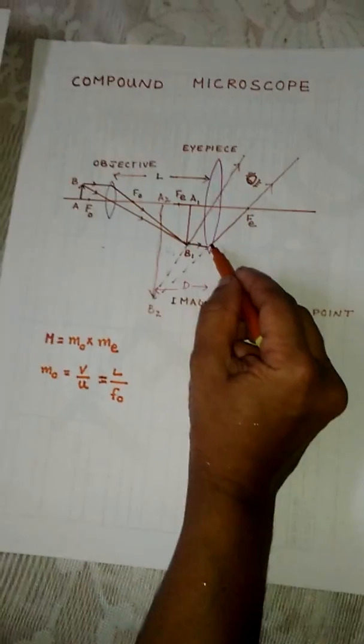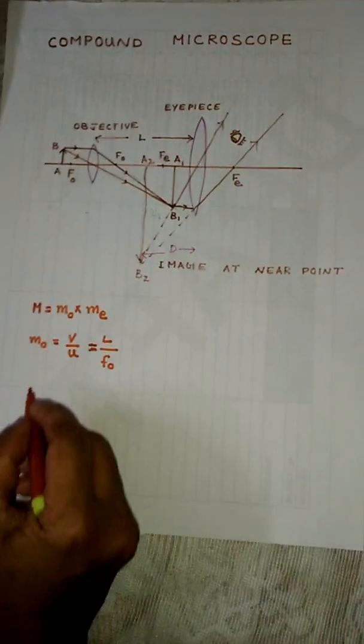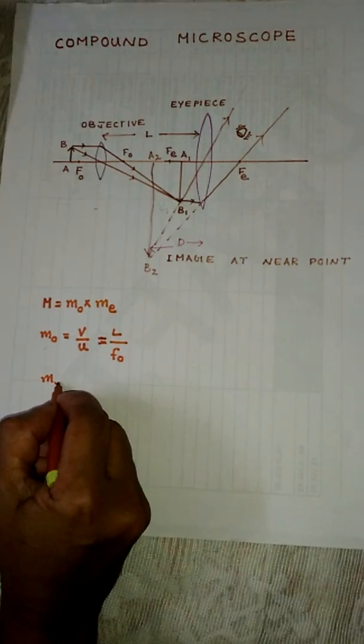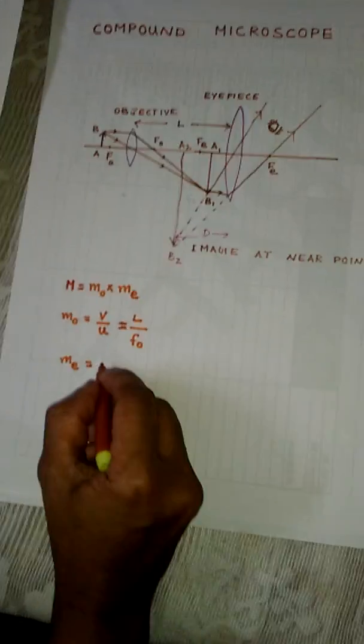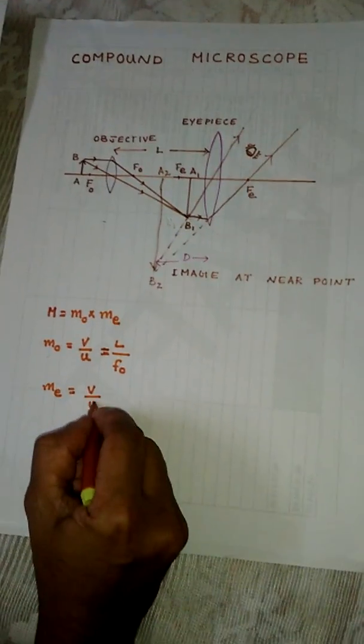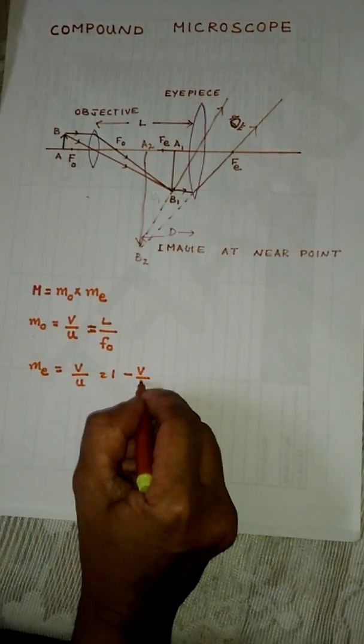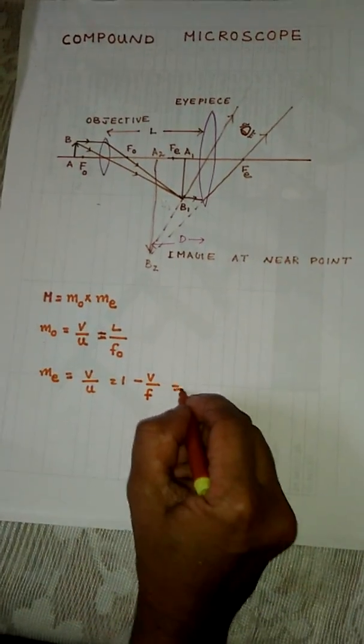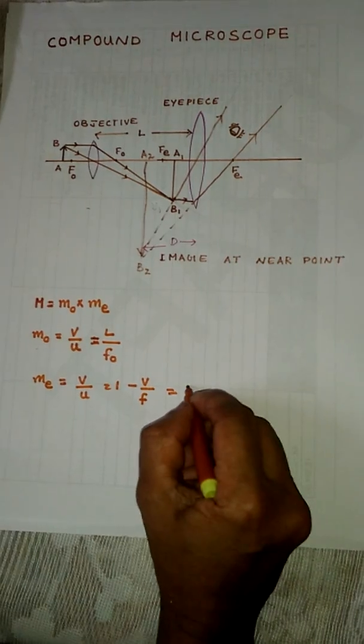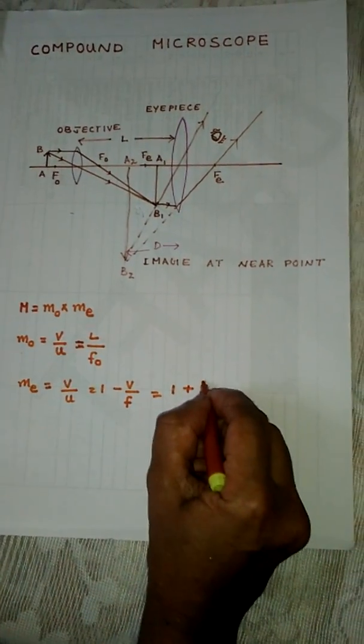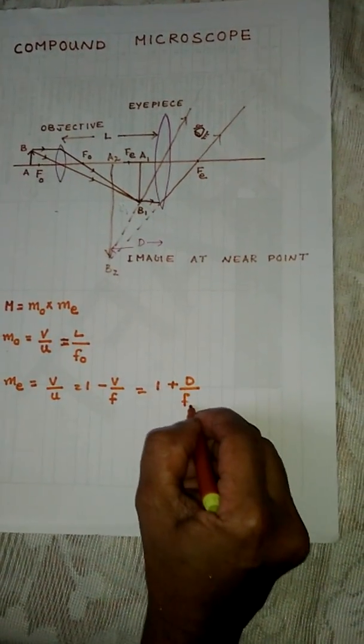The eye lens acts as a simple microscope, so its magnification ME is equal to V by U, which equals 1 minus V by F. Since the image is at the near point, this is equal to 1 plus D by FE, where D is the near point or 25 centimeters.